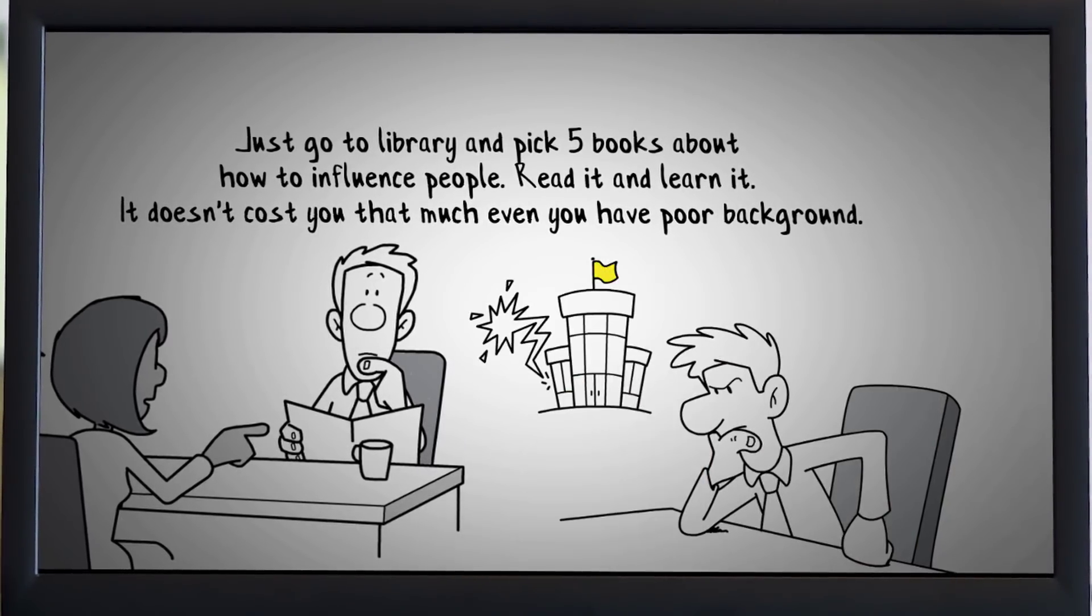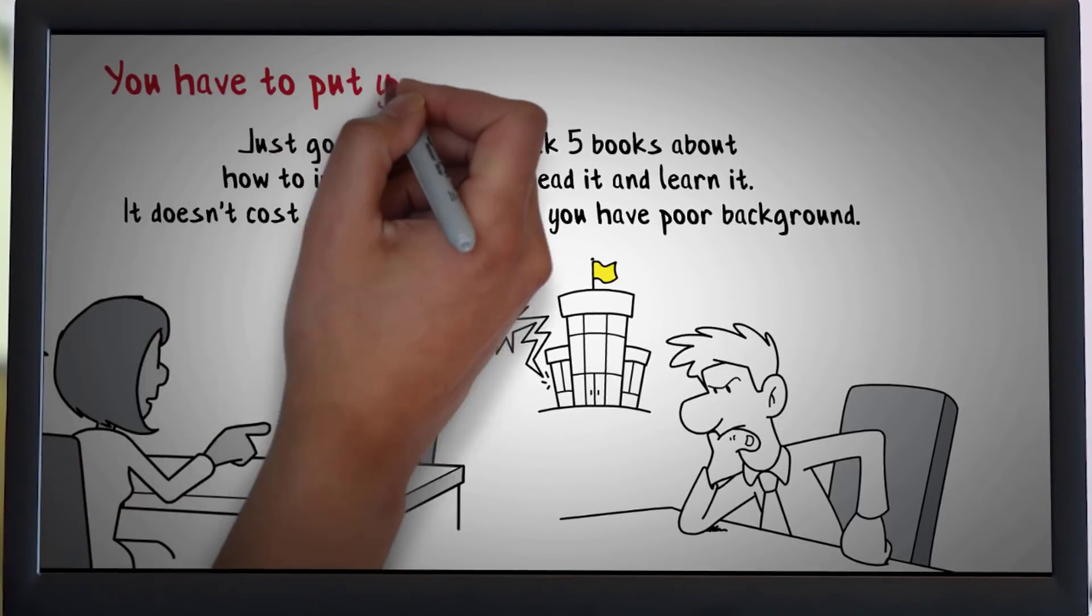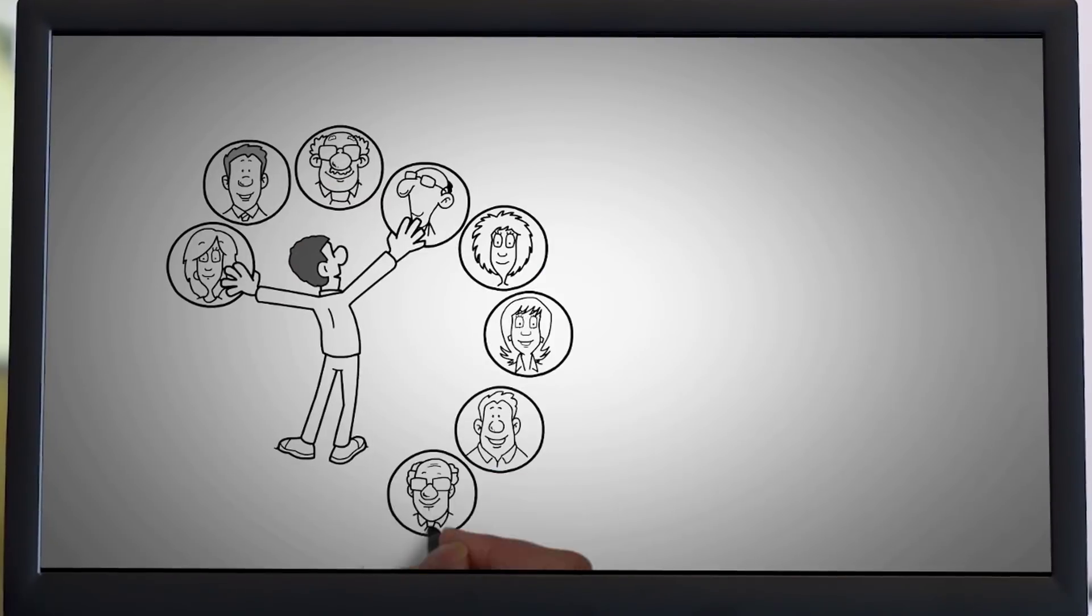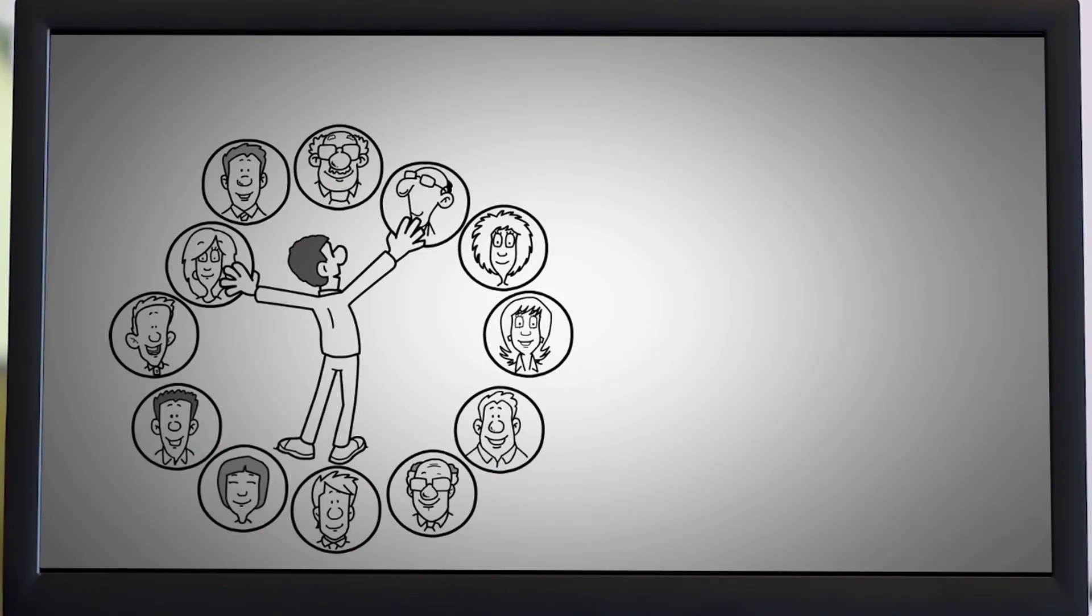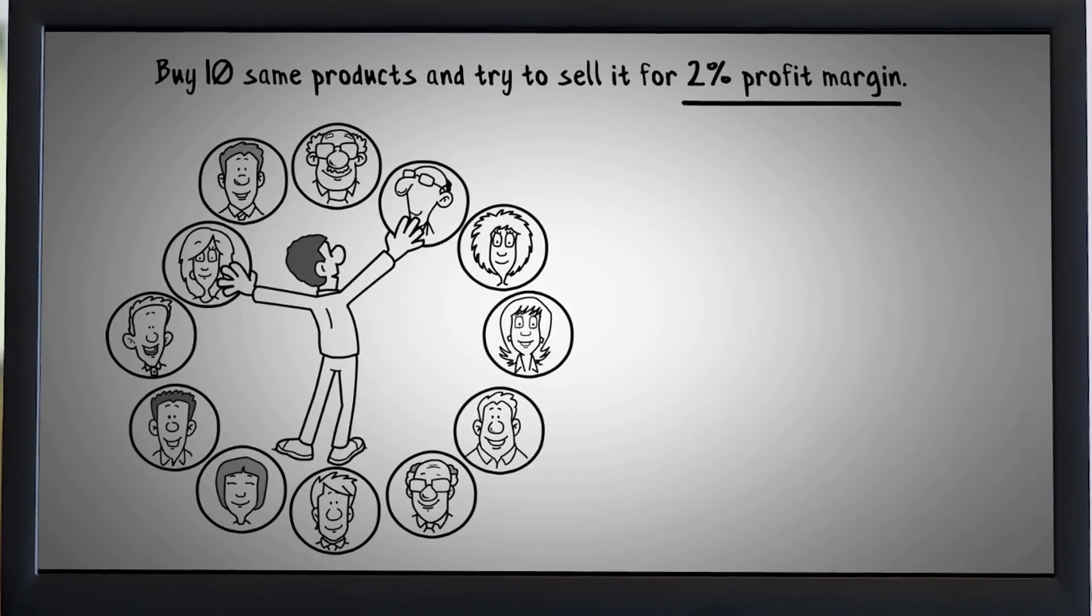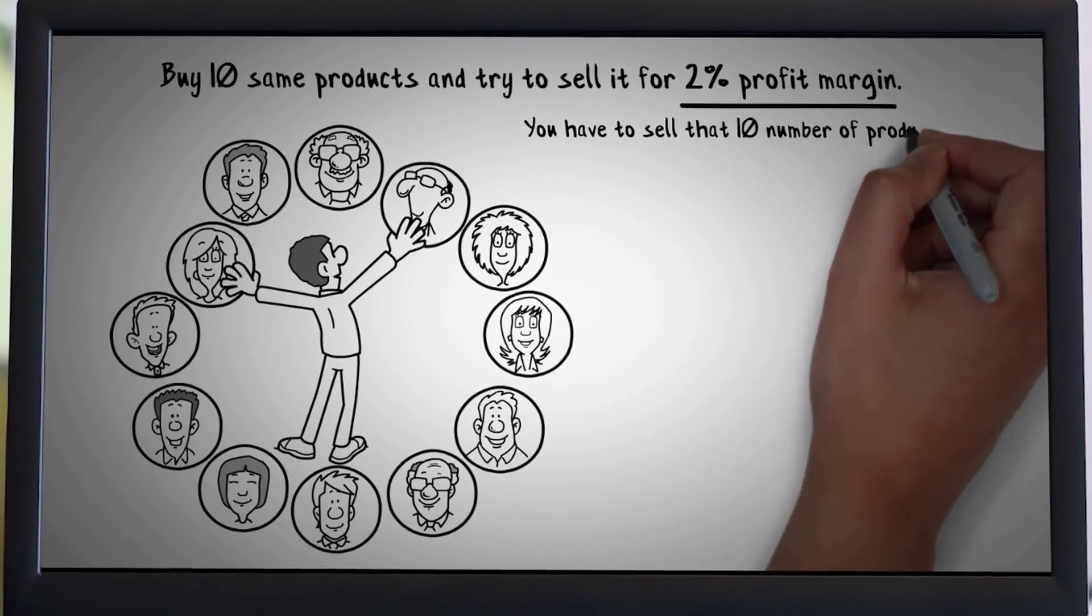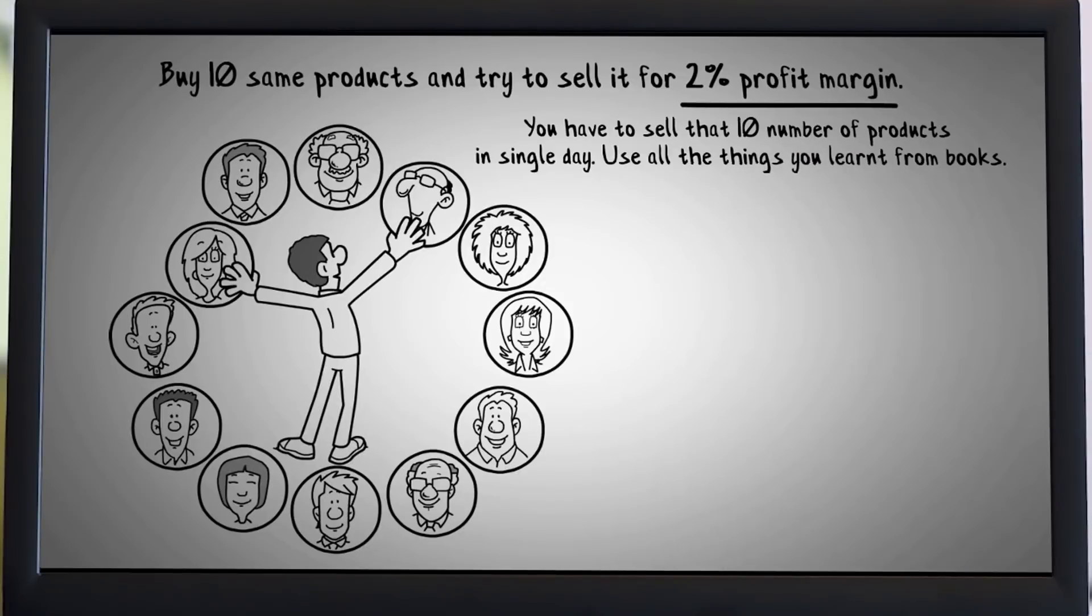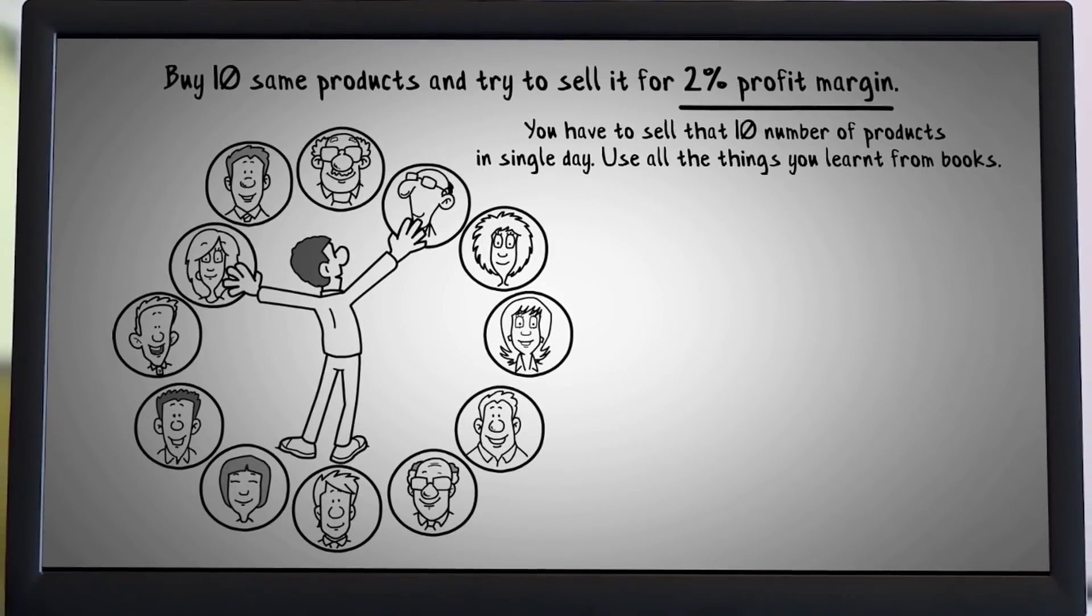Only reading books doesn't make you rich. You have to put your book knowledge in practical way. If you understand how to influence people, then just buy 10 same products and try to sell it for a 2% profit margin. You have to sell that 10 number of products in single day. Use all the things you learned from your books.